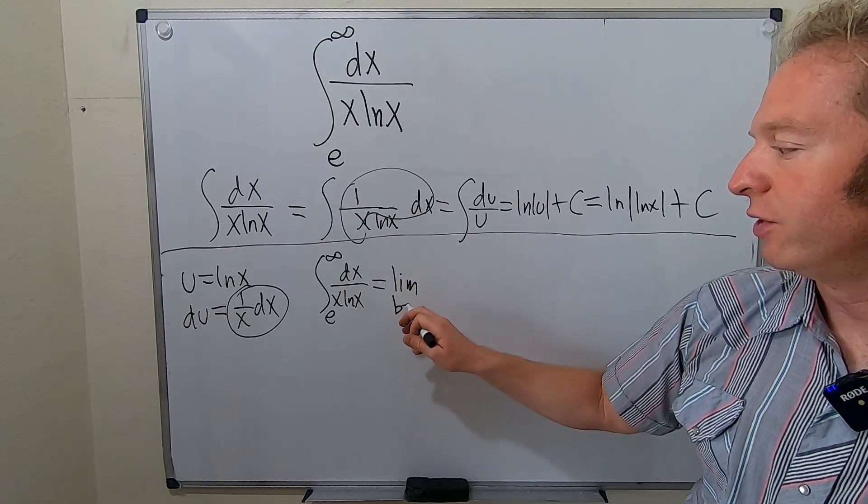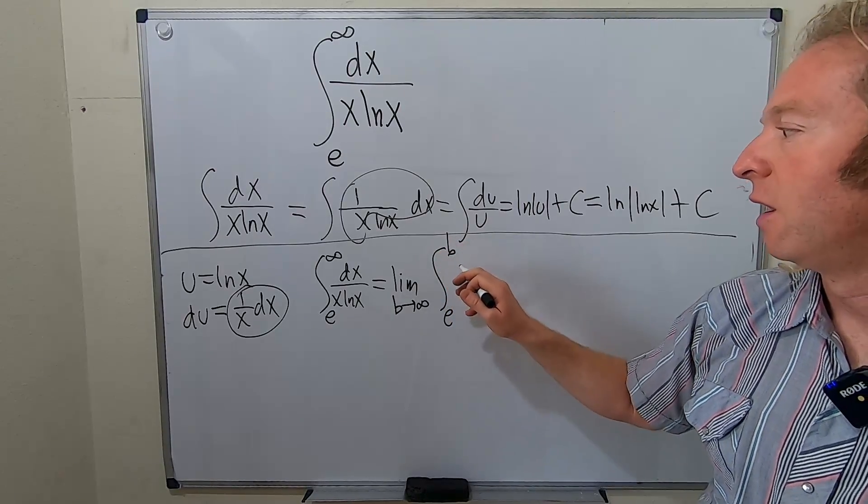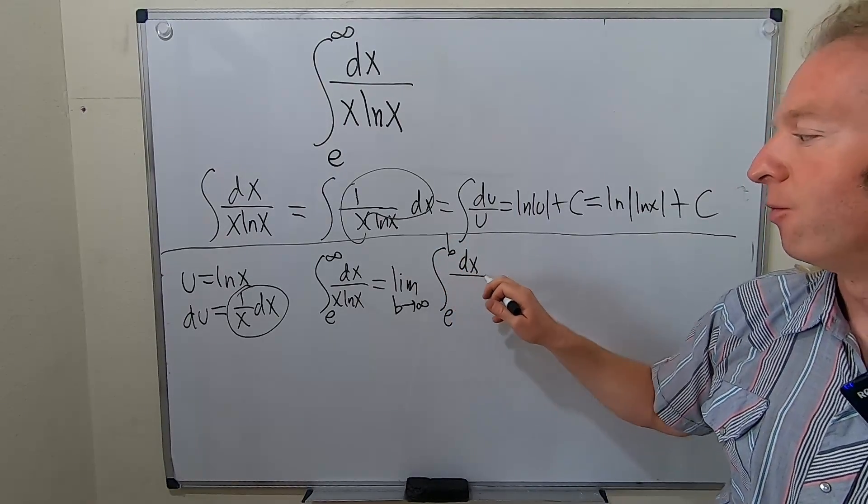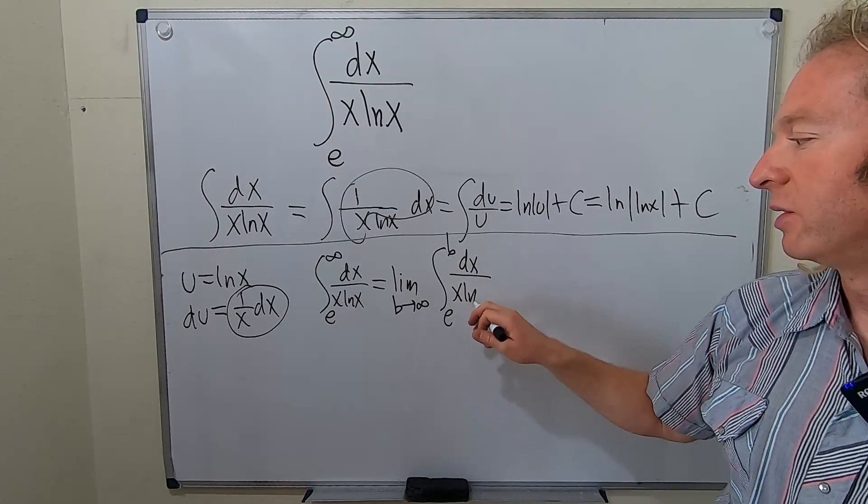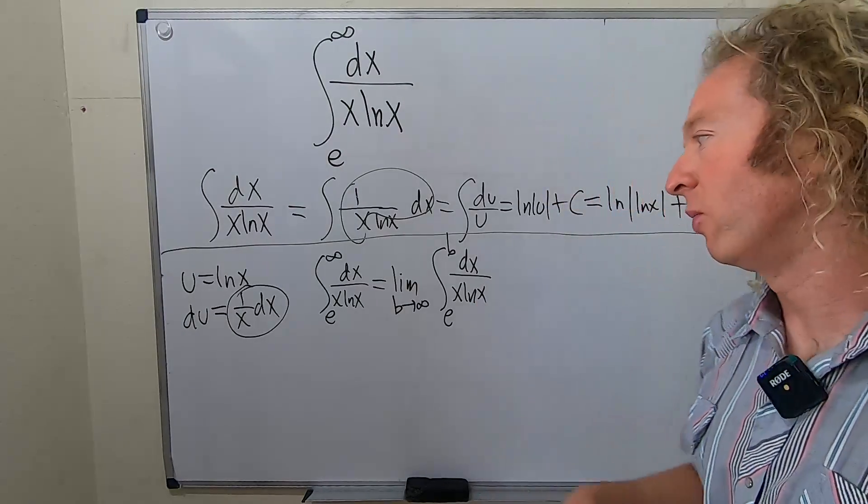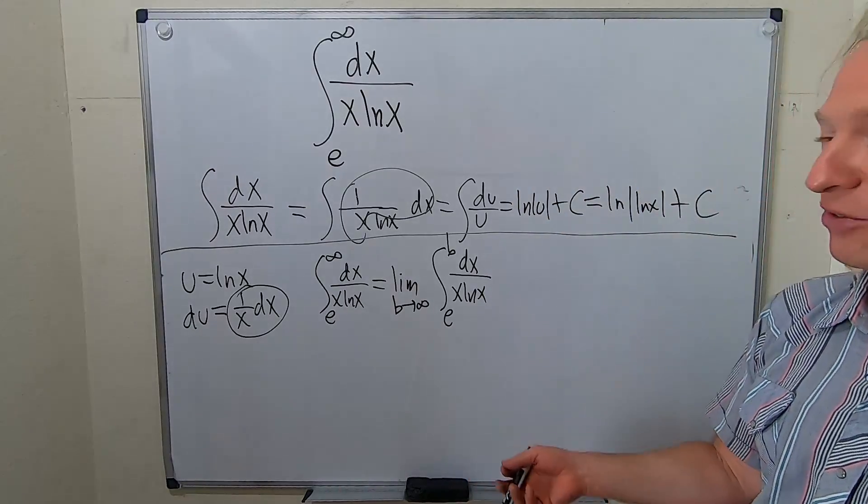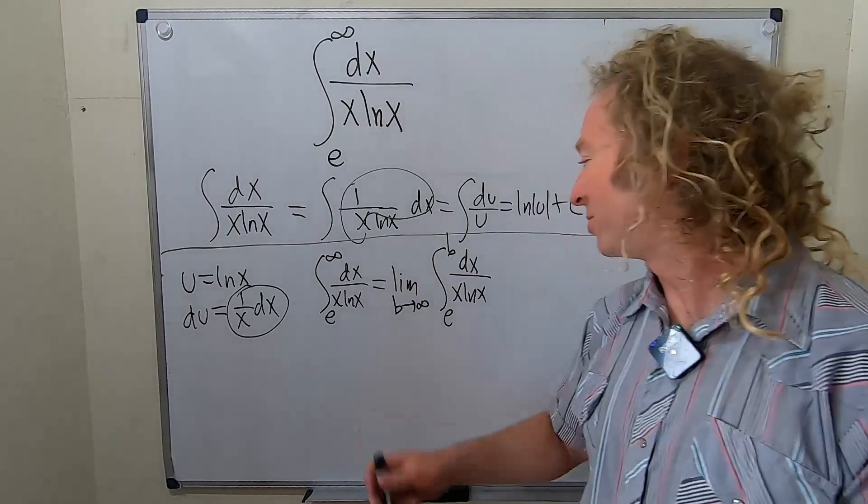This is the limit as b goes to infinity of the integral from e to b of dx over x ln x. So when you're first learning this, it's a bit of like a whoa, it's a lot of notation. You've learned limits, you've learned integrals, and now you have the limit of an integral. So it's a big step up in notation and it just takes some getting used to.